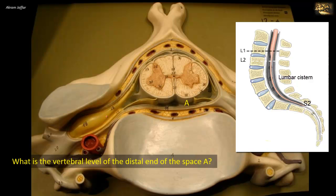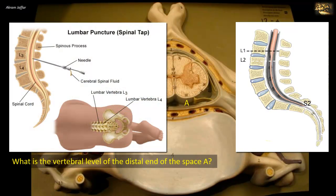CSF may be sampled from the lumbar cistern through a lumbar puncture, which can be safely carried out using a needle inserted in the midline between the third and fourth lumbar spines, or between the fourth and fifth lumbar spines. At these sites — L3-L4 or L4-L5 — there is no danger of the needle passing through the spinal cord, because the spinal cord has already terminated at the level of the intervertebral disc L1-L2.